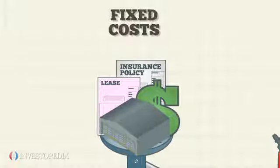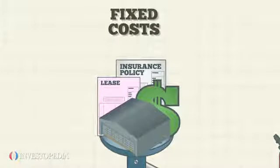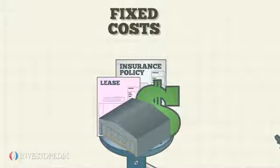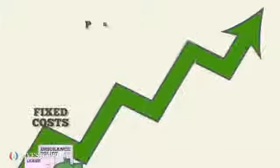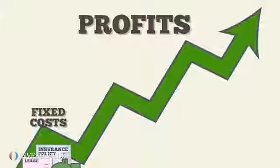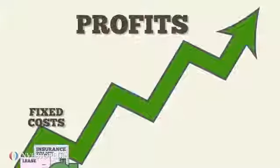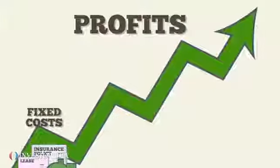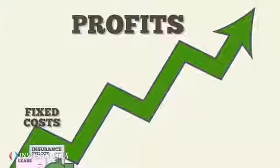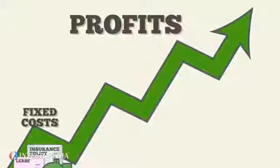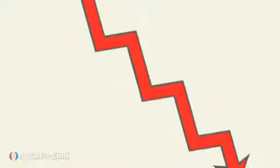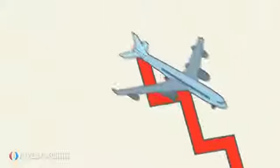A company with a high operating leverage like Hi-Fly will see its profits go up when its ticket sales increase, because fixed costs remain the same. Likewise, a company with low operating leverage in a declining sales period must still pay its fixed costs.